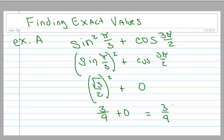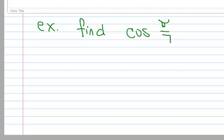Let's do another example. This is nice and quick. We want to use our calculator to find the cosine of pi over 7.